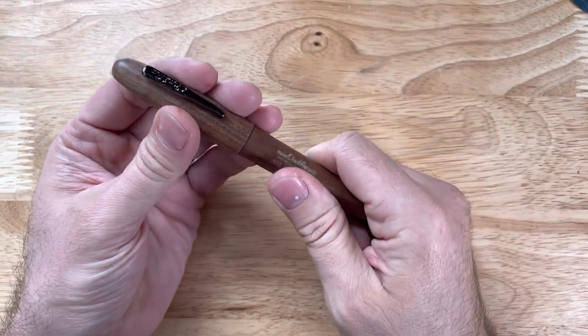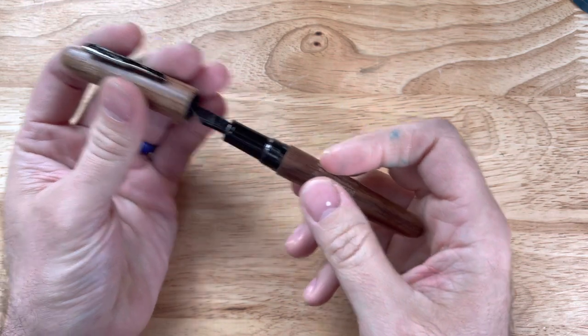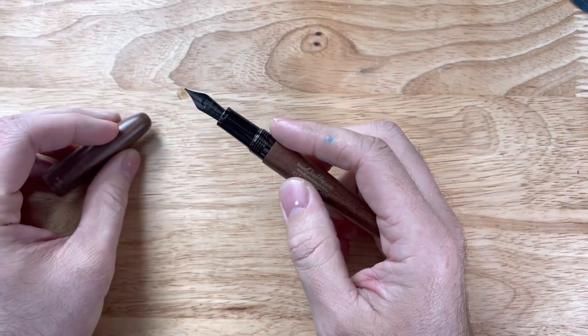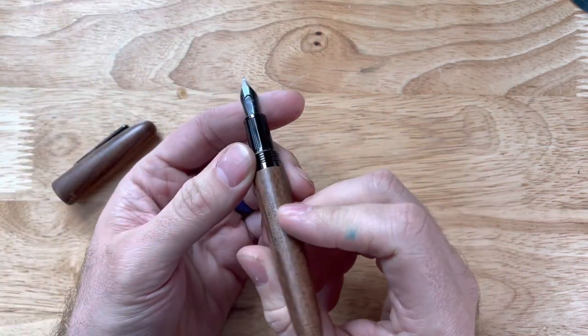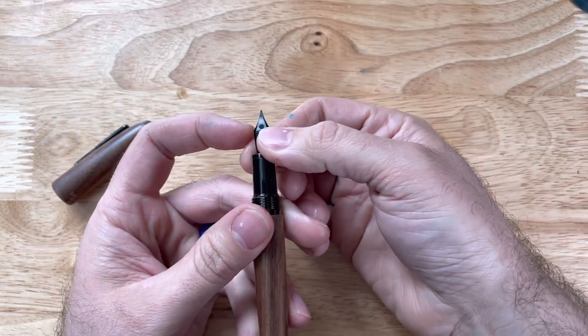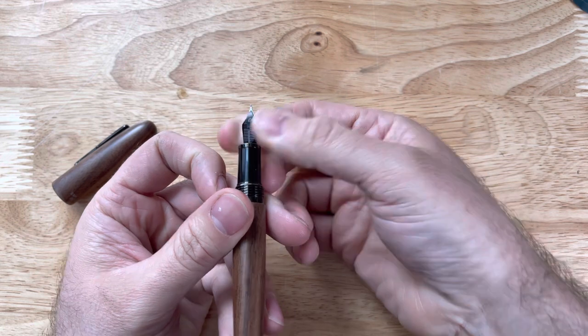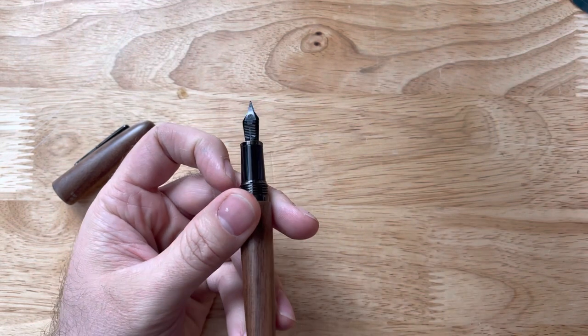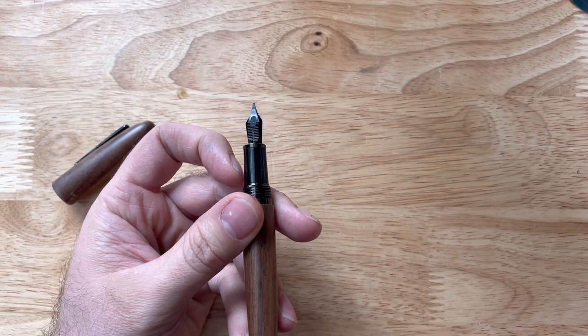So I'm holding this Conklin All-American pen. This has a Yovo number six size nib on it and my customer care team asked me if I could shoot a little video because we do get questions every now and then about nib and feed alignment. Now this is not just specific to this pen, it could be any number of pens that might have this issue.